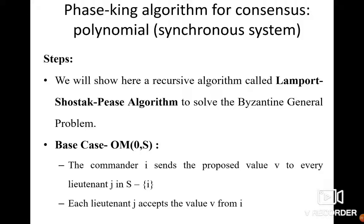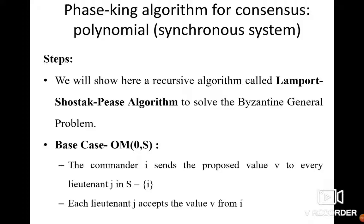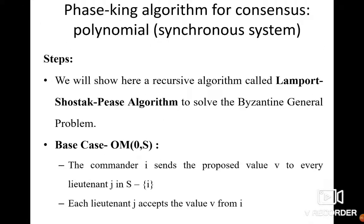The next algorithm is the phase king algorithm, for a polynomial synchronous system. The Lamport-Shostak algorithm is called the phase king algorithm. It has two cases: the base case, denoted as OM(0, S), and the recursive case, denoted as OM(m, S). In the base case, commander i sends the proposed value v to every other substitute.